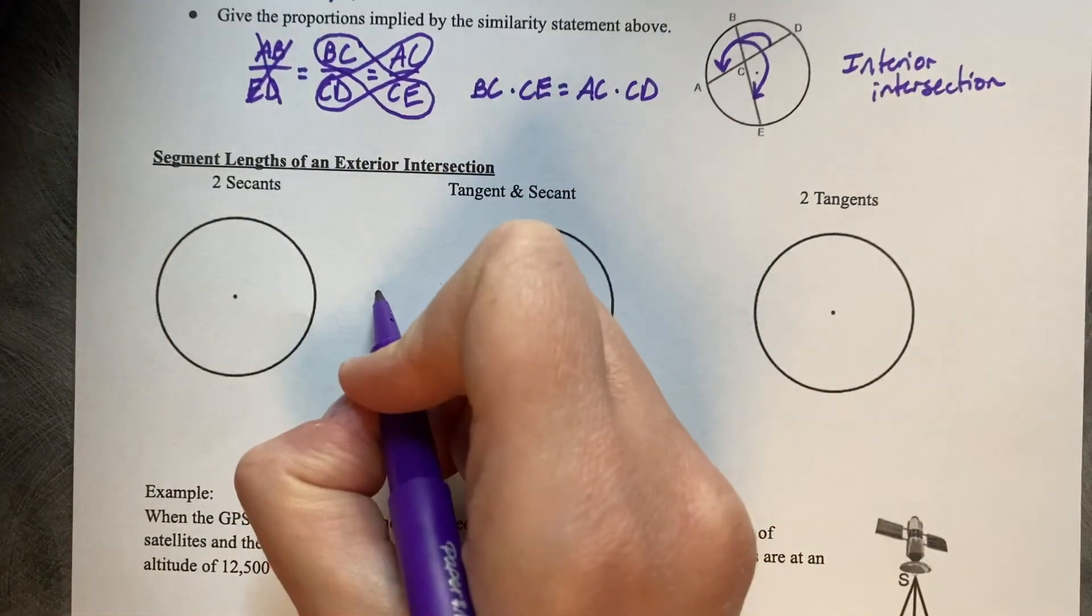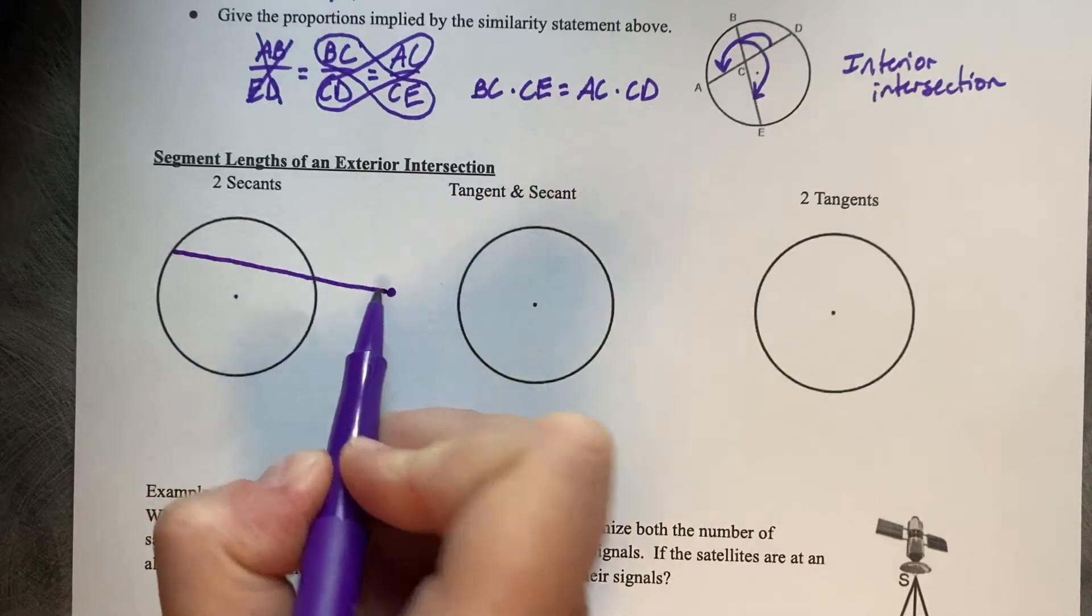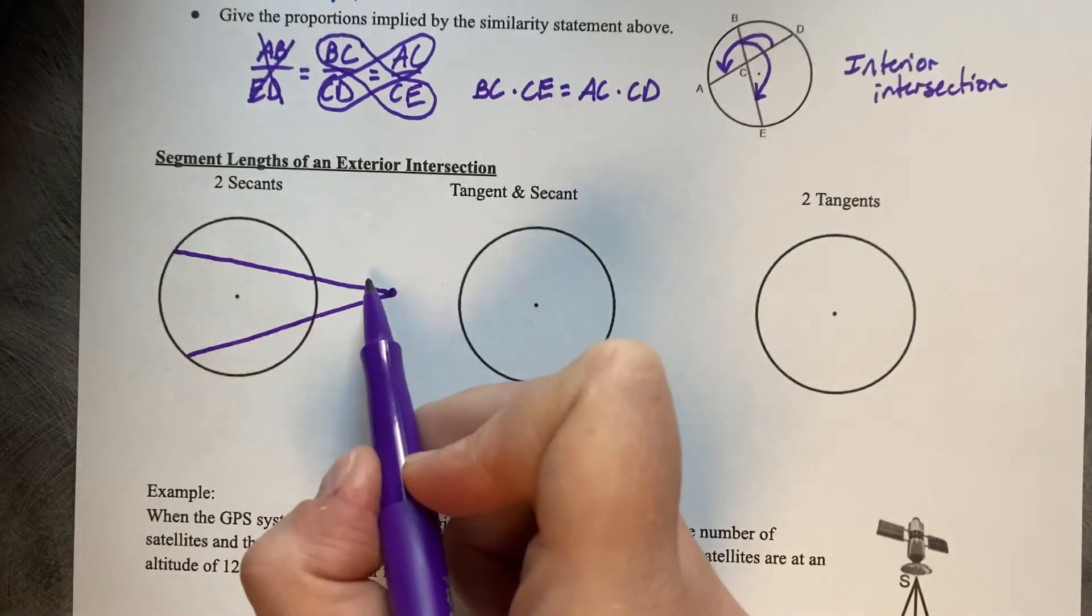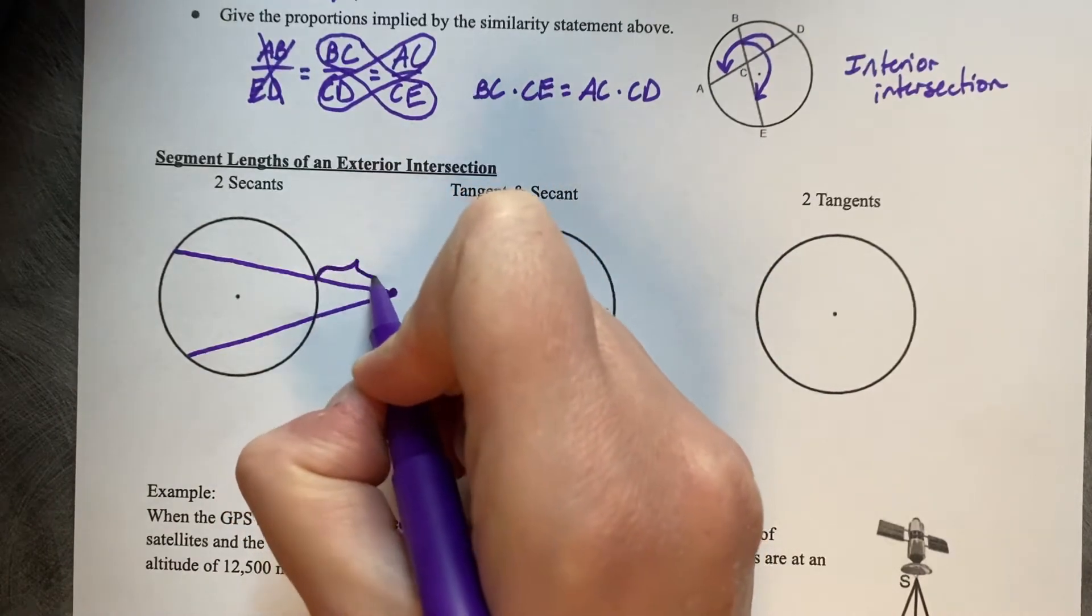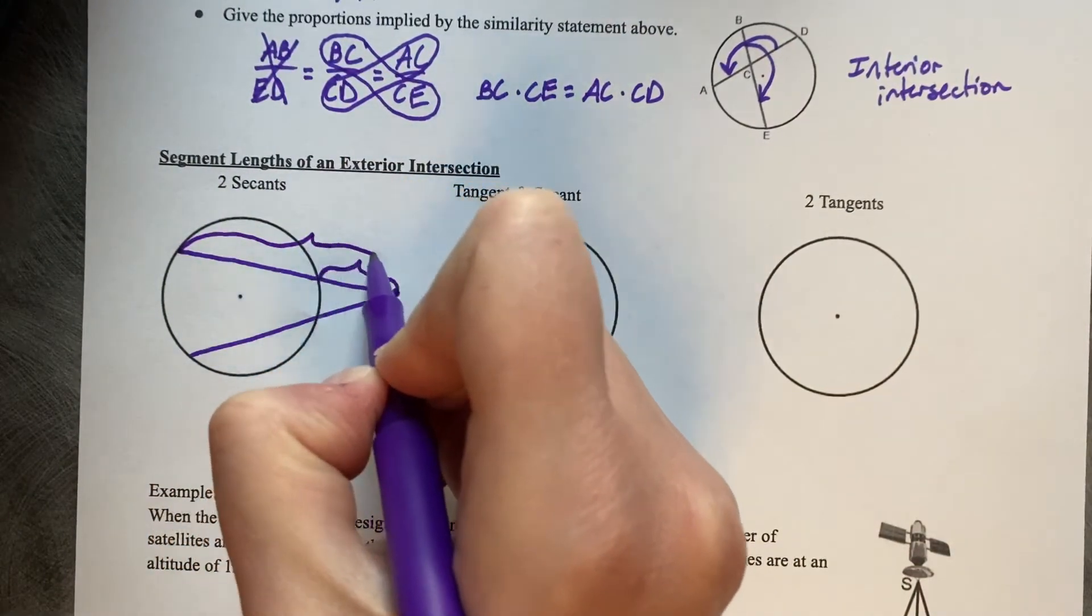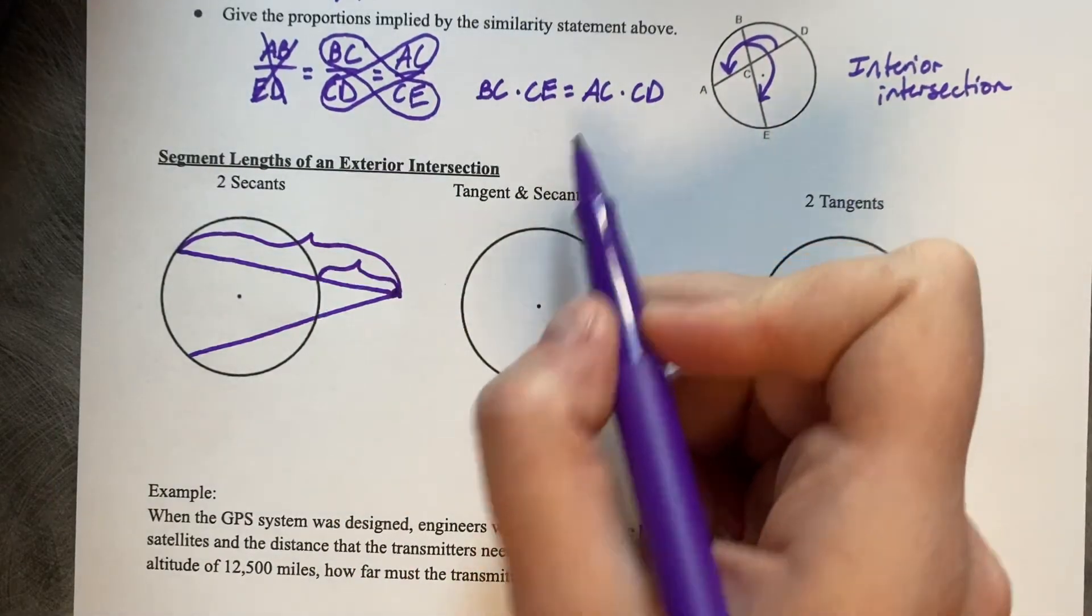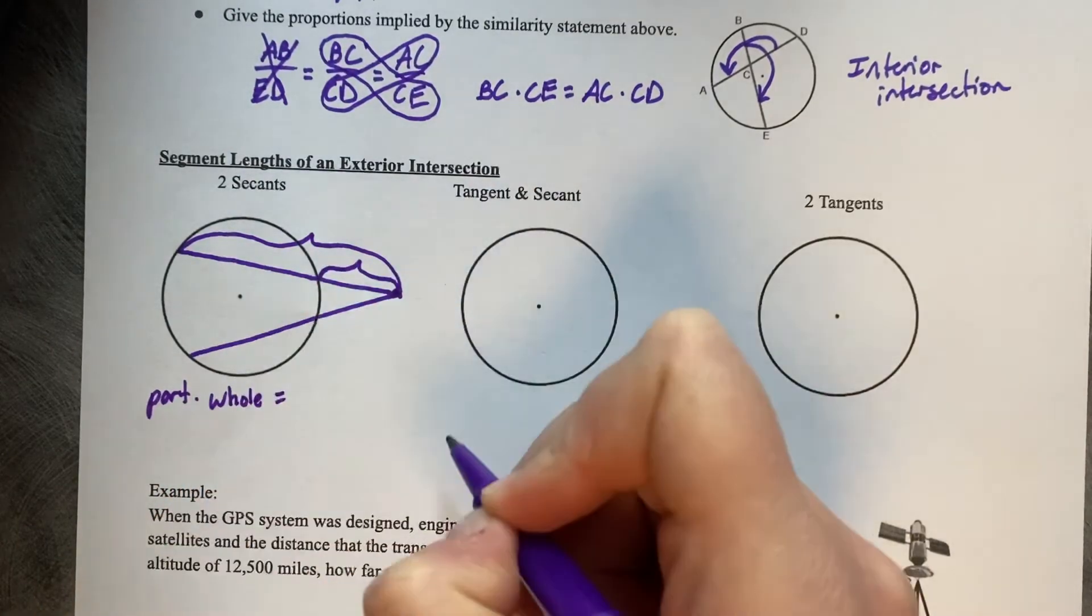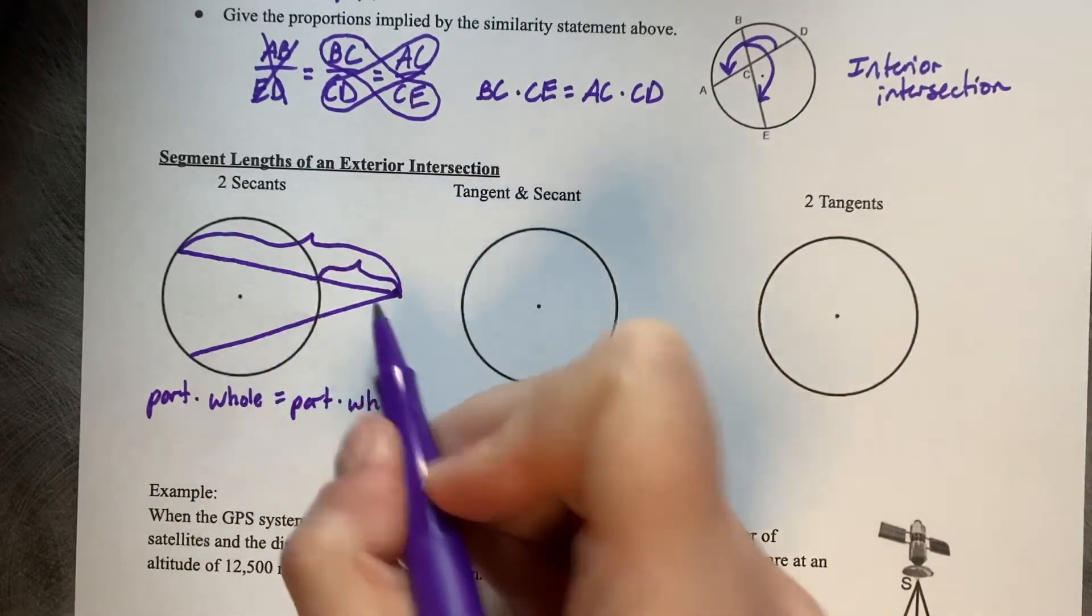So let's do two secants first. So let's do an exterior point out here. We've got one secant that goes to it and a second secant that goes to it. If we want to know something about these lengths, what's happening is that you take this part, which is from the edge of the circle to the intersection, and then you've got this whole segment. And what you do is you multiply those together similar to this one. So I'm going to just write it out in words. You're going to do the part times the whole equals the part times the whole of your second segment, of your second secant.